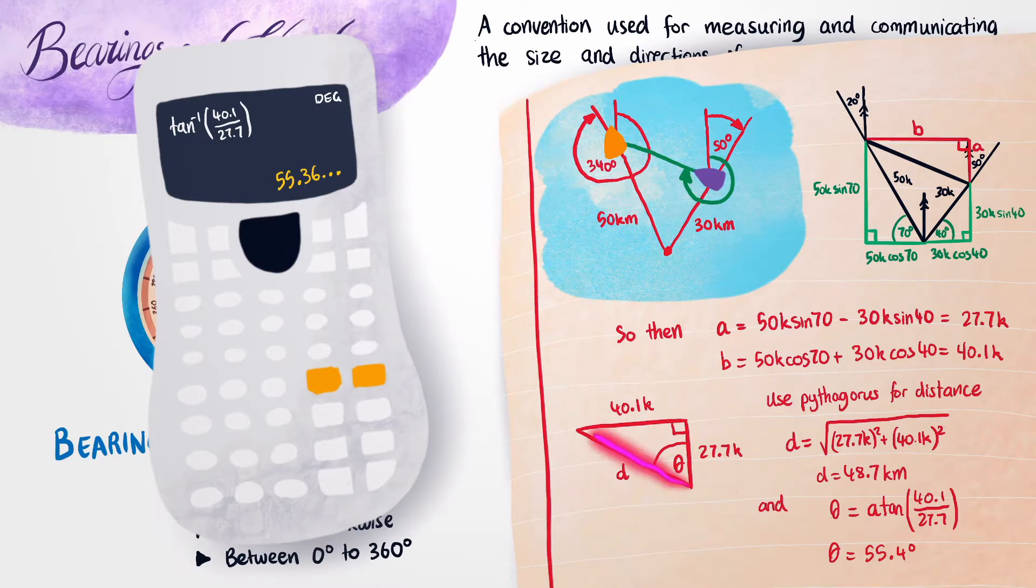So now we know that our boat would need to travel in this direction for 48.7 kilometers at an angle of 55 degrees from north. However this isn't actually a true bearing. To get a true bearing, you'd actually have to find the angle from here to here.